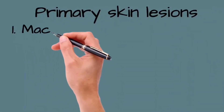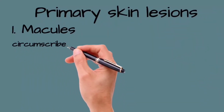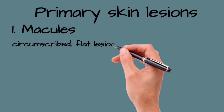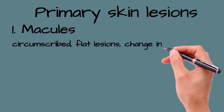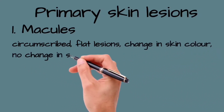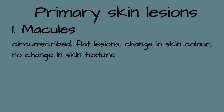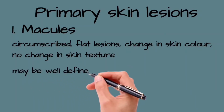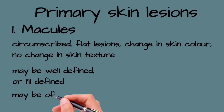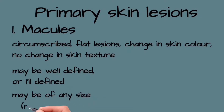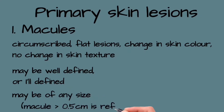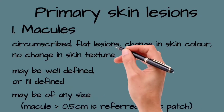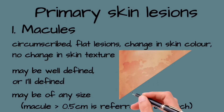A macule is a circumscribed, flat lesion of skin which is visible because of a change in skin color and not felt, as there is no change in skin texture. Macules may be well-defined or ill-defined, and may be of any size. A macule more than 0.5 cm is referred to as a patch.